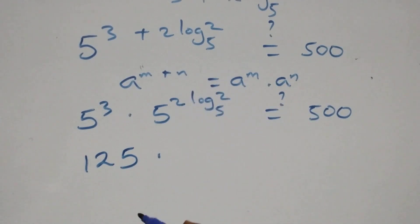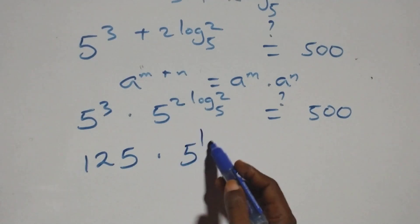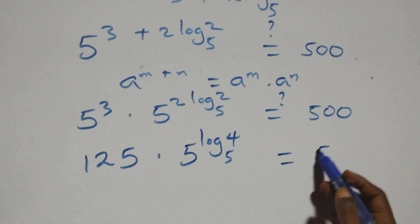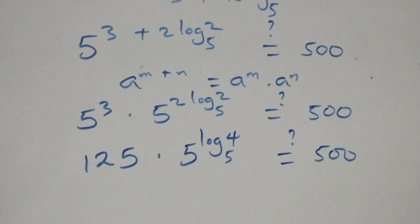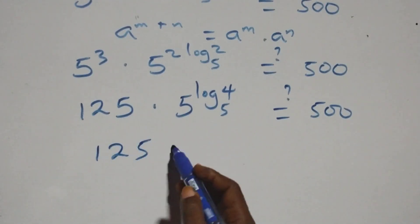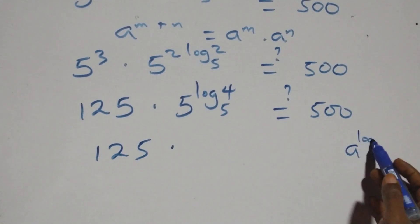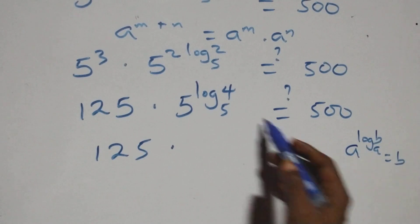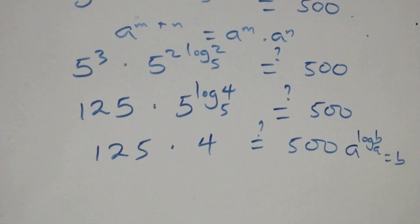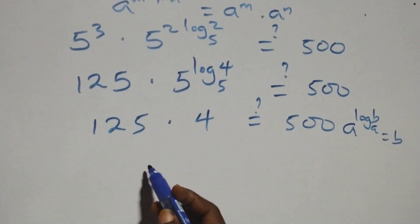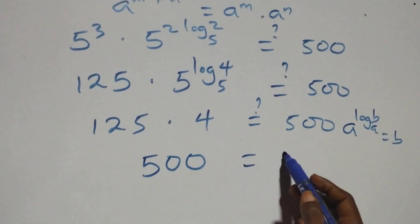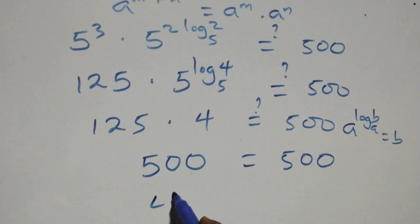Here we reverse the power of logarithm: 5 raised to power log 2 squared base 5. This follows when we have a raised to power log b to base a, which equals b. So 5 raised to power log 4 base 5 equals 4. We then have 125 times 4, which gives us 500. This is equal to 500 on the right-hand side, confirming the answer.